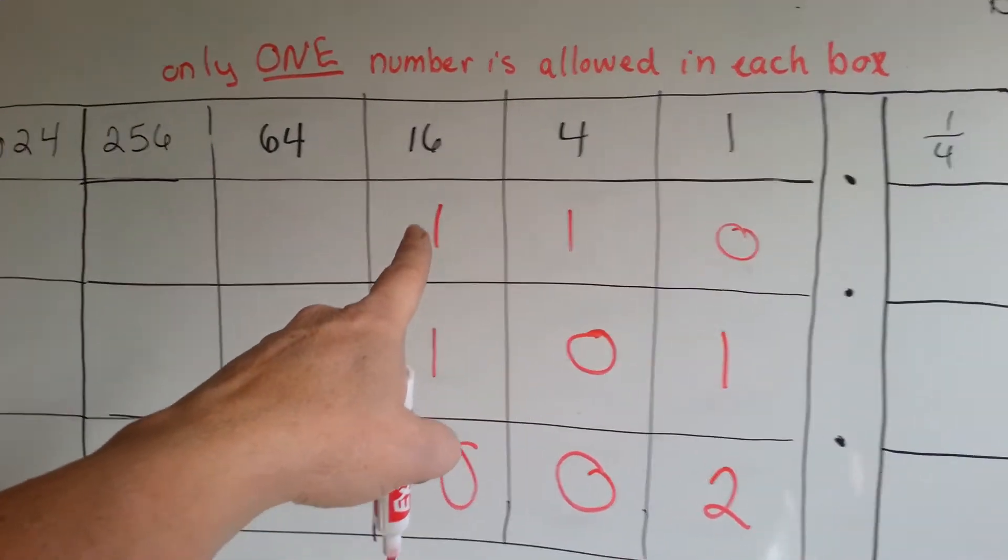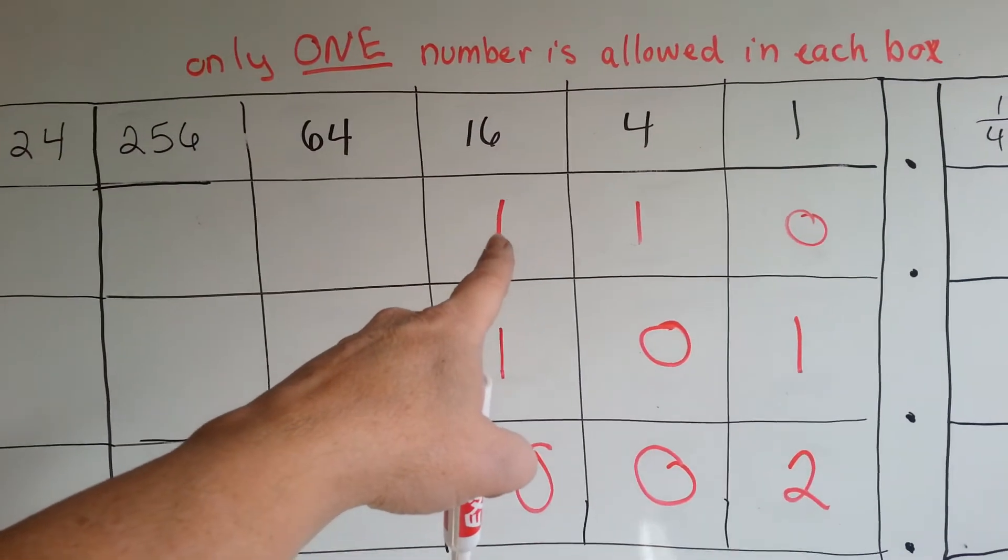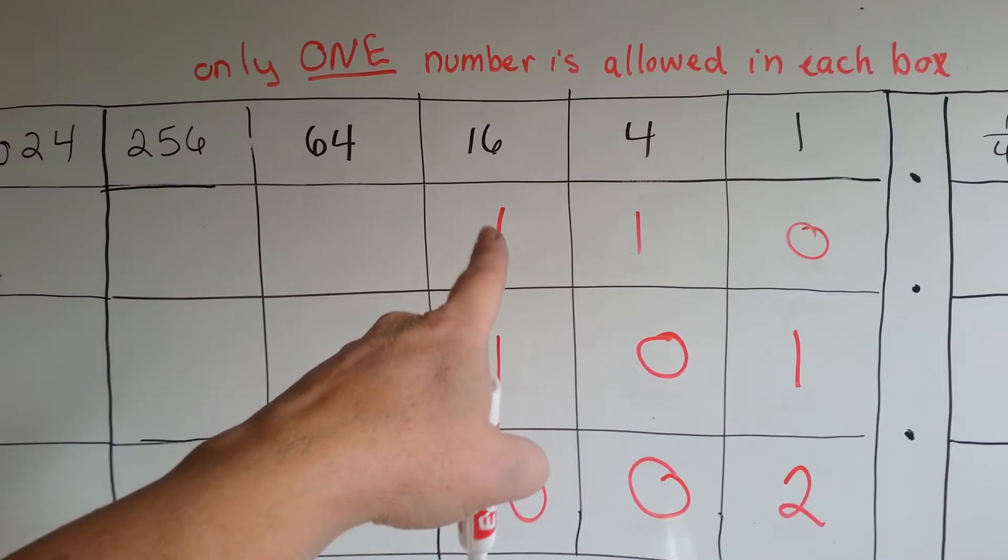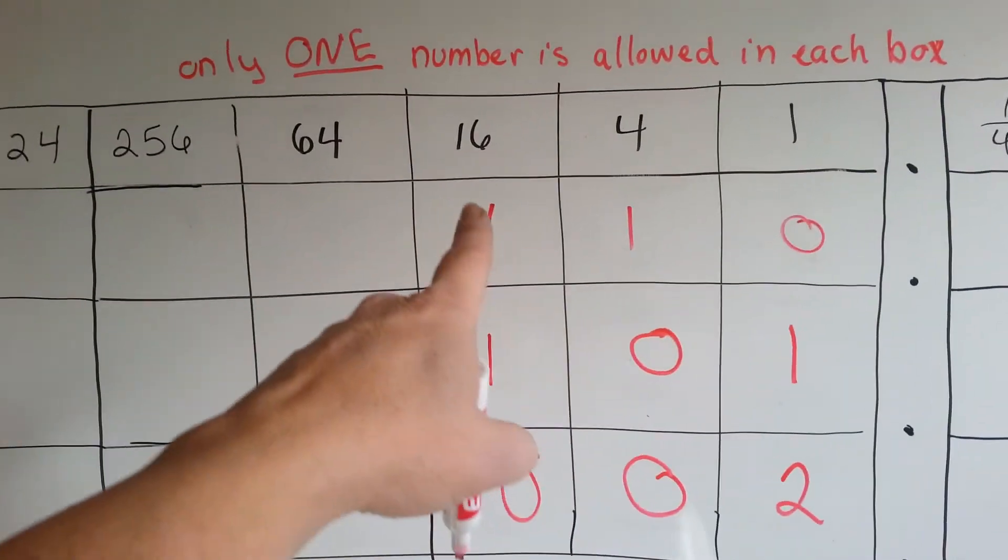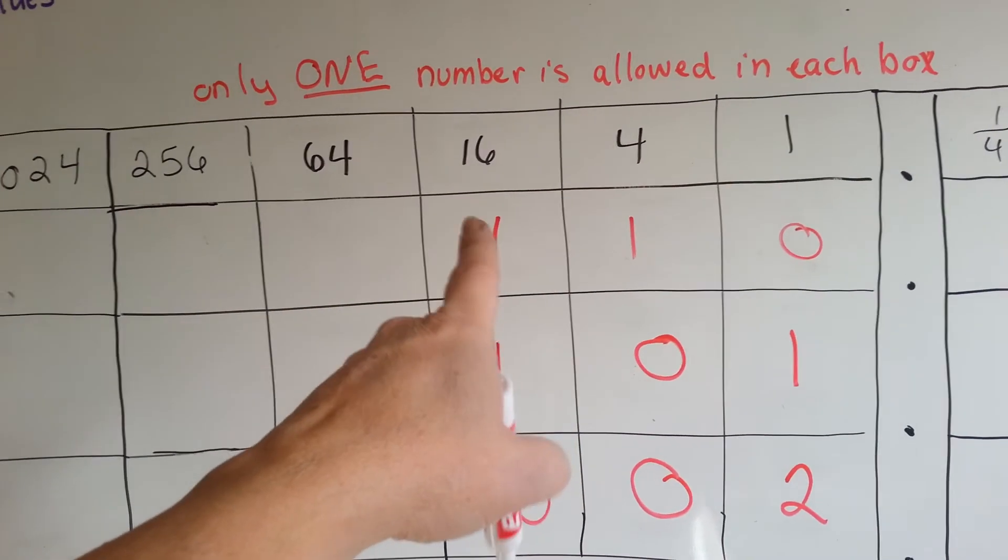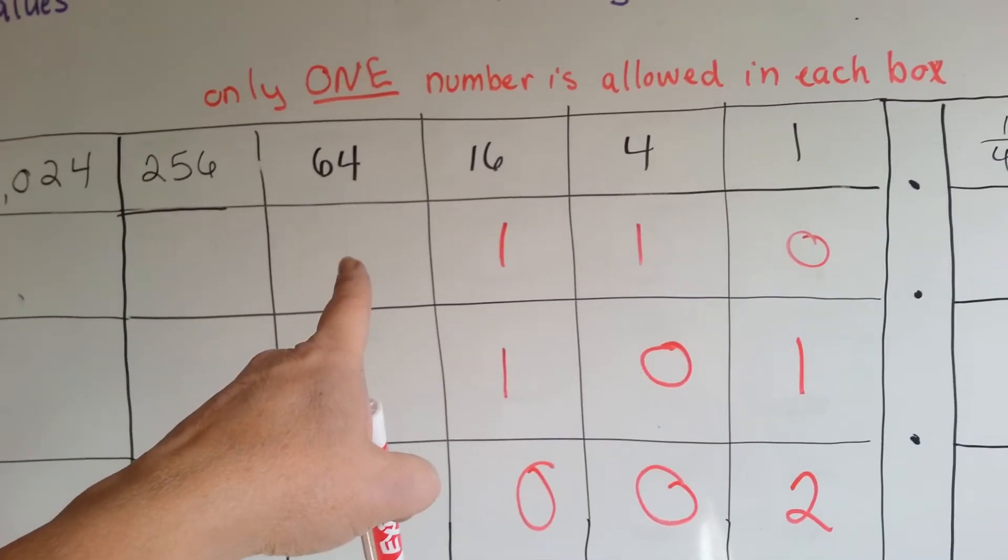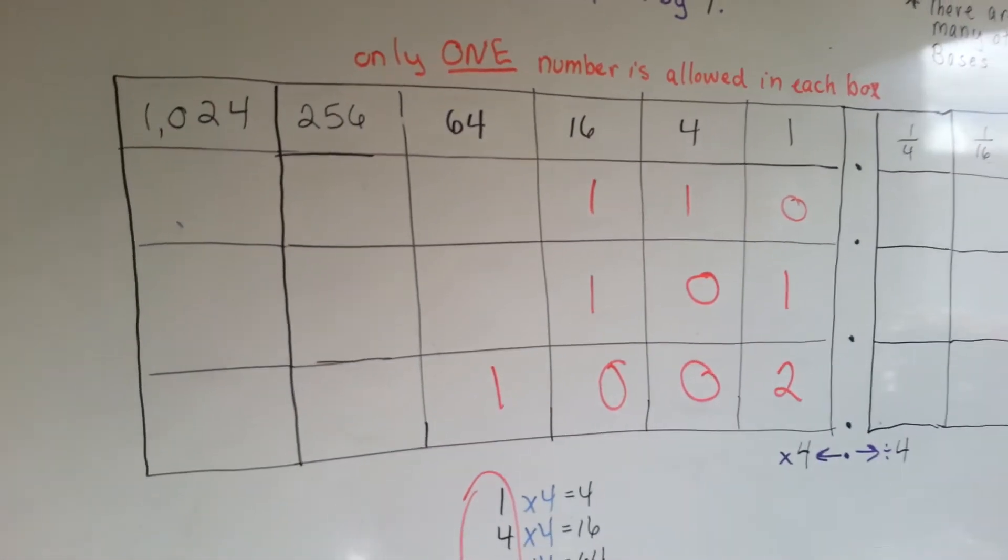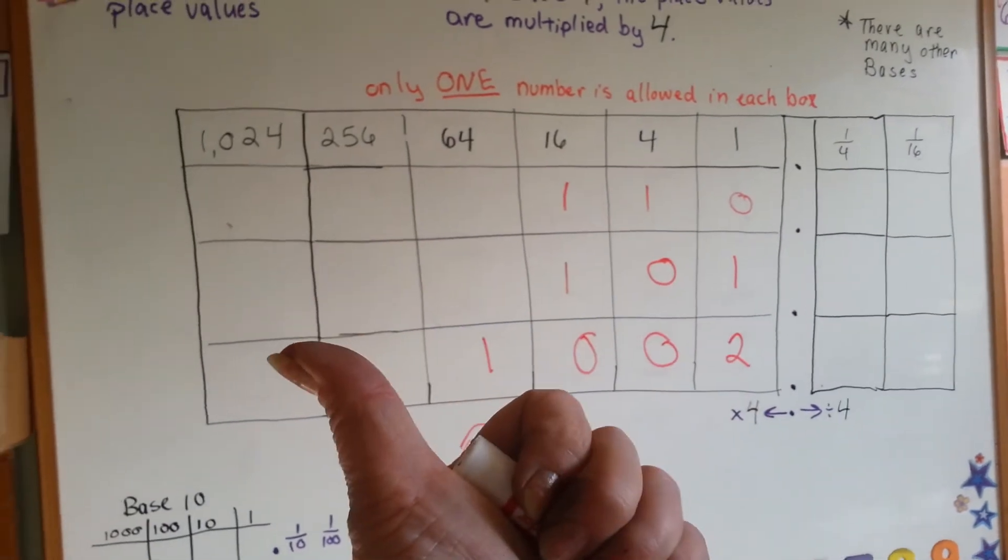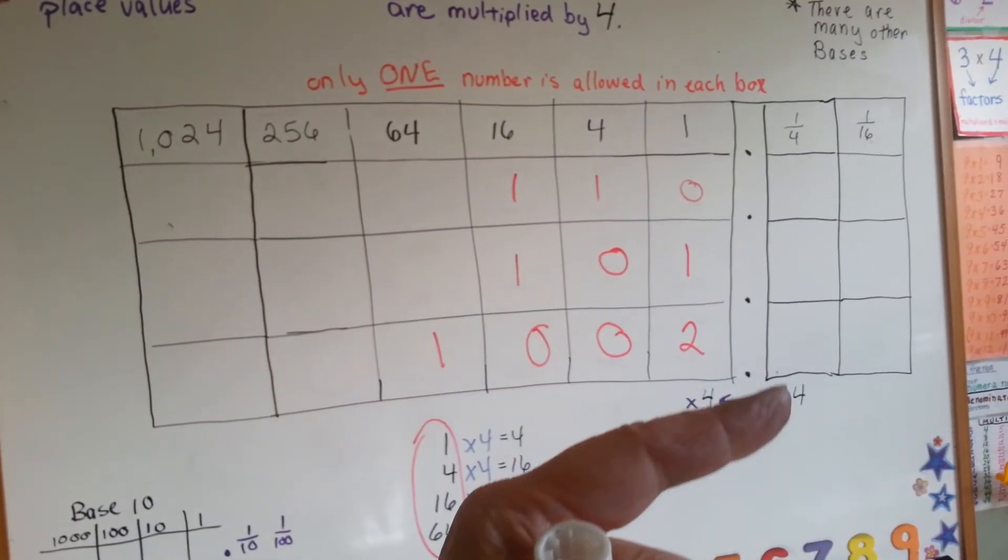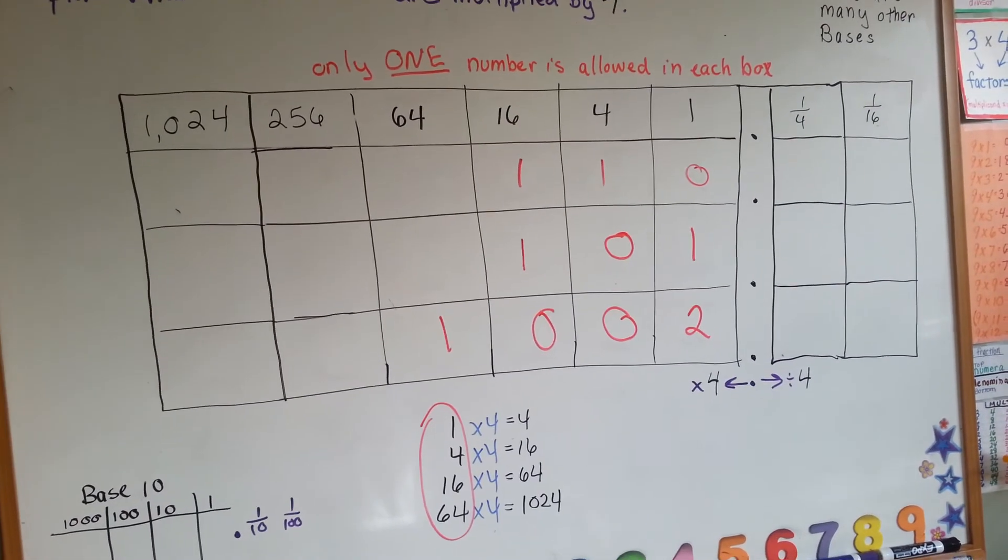The minute that you go to seventeen, you have to go to one-zero-one. But the minute you get to sixty-five, you can't be in this column anymore. You've got to be in this column. Base four. Keep multiplying by four to the left of the decimal place. Keep dividing by four to the right of the decimal place.